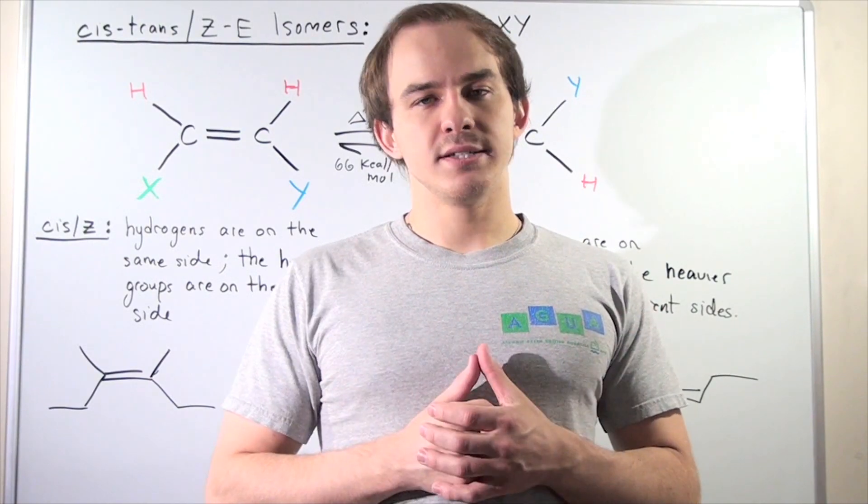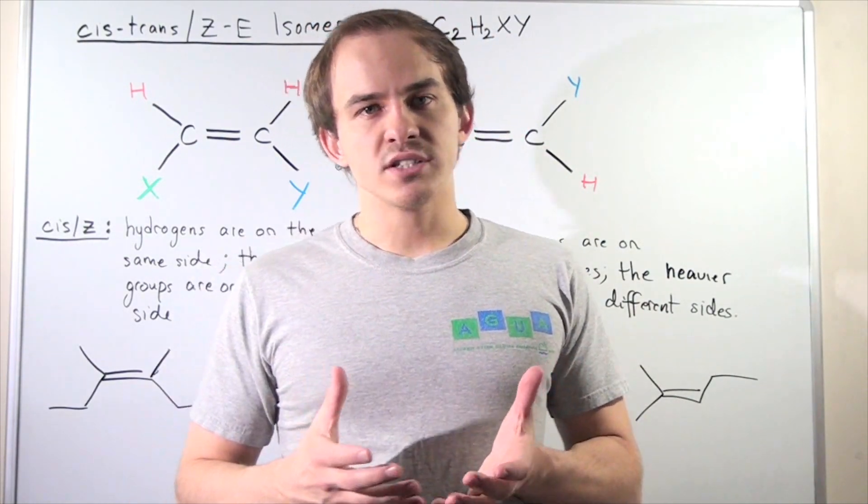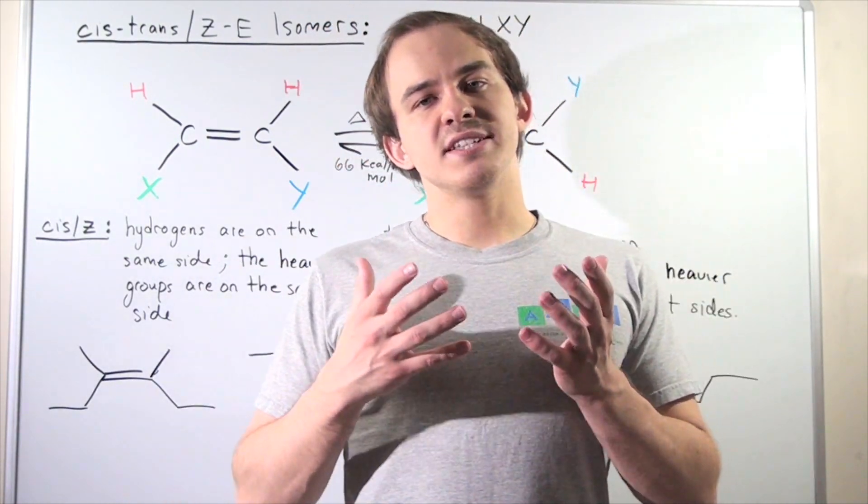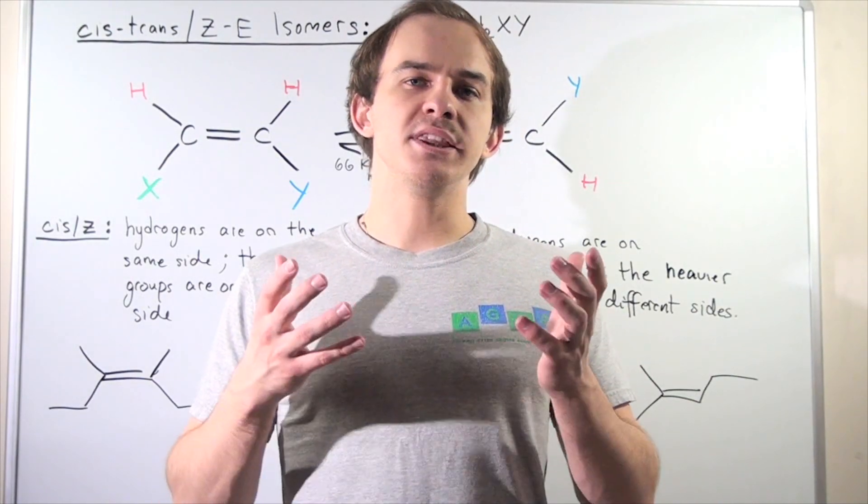Let's recall what an isomer is. Two compounds are said to be isomers when they have the same exact molecular formula but different structures.